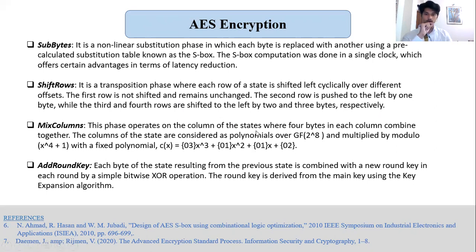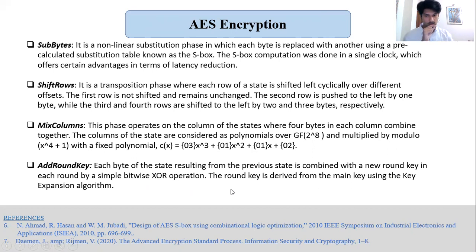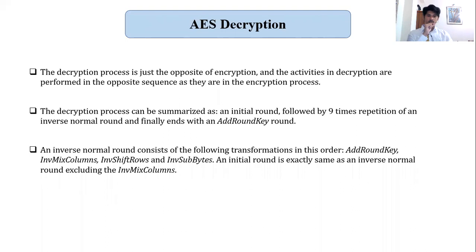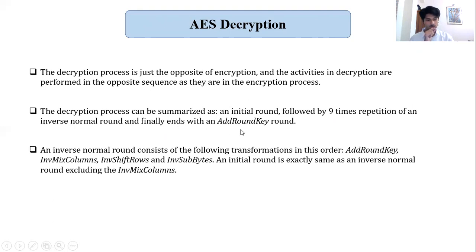MixColumns operates on the columns of the state where four bytes in each column combine together. The columns of the state are considered as polynomials over the Galois field and multiplied modulo x to the power four plus one with a fixed polynomial. In the AddRoundKey block, each byte of the state is combined with a new round key in each round by a simple bitwise XOR operation. This round key is derived from the key expansion algorithm. The decryption process is the literal opposite of encryption where all transformations are performed in opposite sequence. It consists of an initial round followed by nine inverse normal rounds and finally ends with an AddRoundKey round. The inverse normal round consists of: AddRoundKey, InverseMixColumns, InverseShiftRows, and InverseSubBytes.